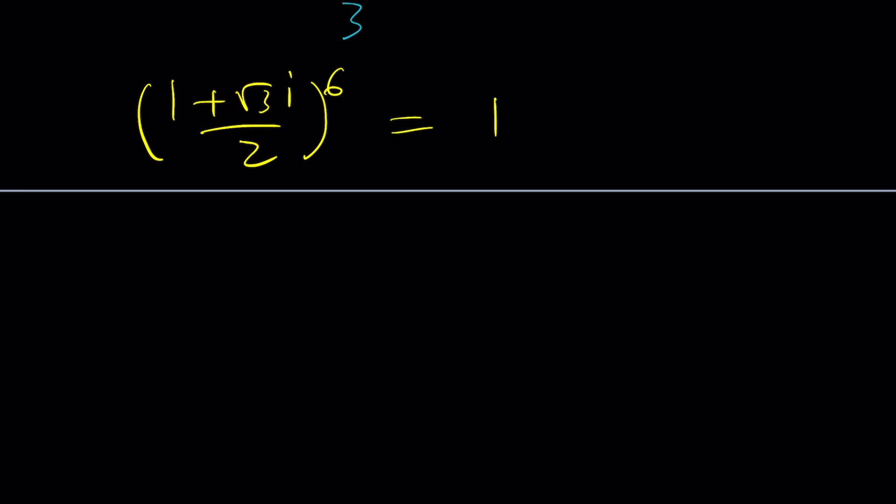Anyways, but since this is 1 from De Moivre's theorem, I can also raise both sides to the power k. So, kind of like this, to the power k, to the power k. But when you do, you're supposed to multiply the exponents. So, (1 + √3i)/2 to the power 6k is just going to be 1 again, because 1 to the power k is always 1.